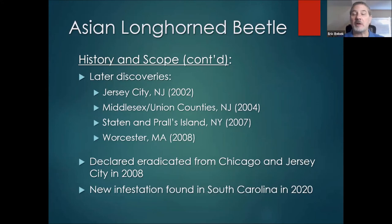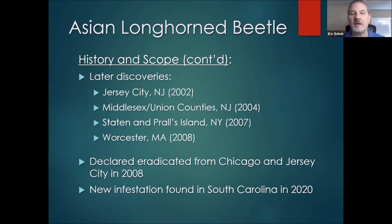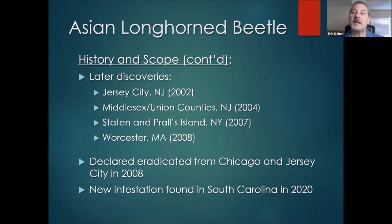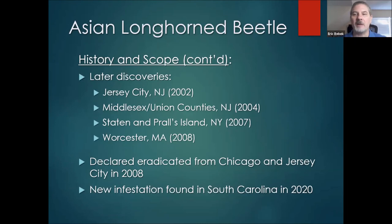We do have some success with eradication efforts for Asian longhorn beetle — tree removal, cutting down many city blocks of trees and denuding those landscapes. The difference from emerald ash borer is that emerald ash borer is a lot more mobile — it flies much greater distances as it's a smaller, better flyer. Asian longhorn beetles are much larger, more lumbering beetles that don't fly very far. That biology works to our advantage in trying to limit the spread of this species. Another new infestation was found in late summer 2020 in South Carolina, where a colleague at Clemson is now working on containment and eradication efforts.